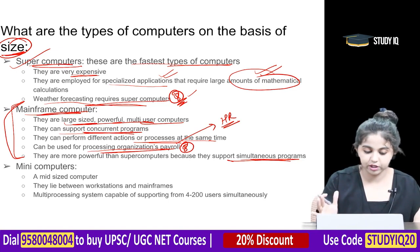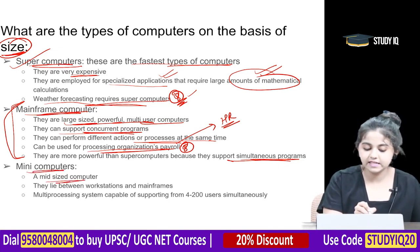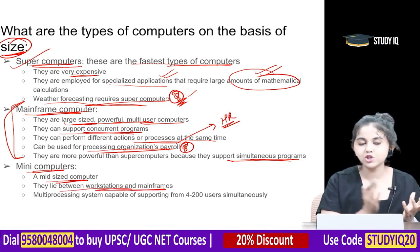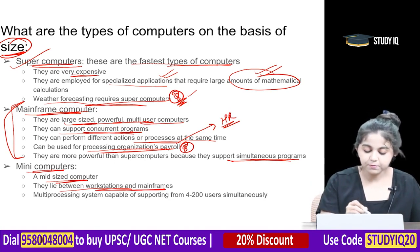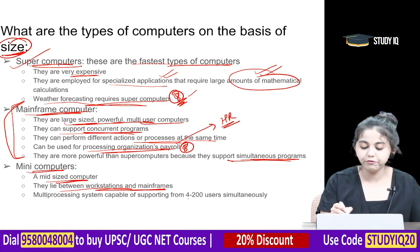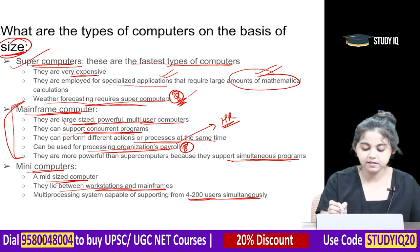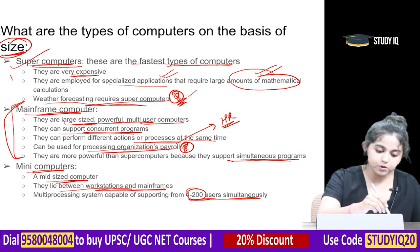Mini computers are mid-sized computers that lie between workstations and mainframes. They are multi-processing systems capable of supporting 4 to 2,000 users simultaneously.